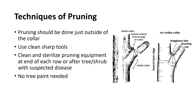Pruning branches should be done just outside of the collar that naturally forms at the junction of the branch and the trunk of the tree. Clean sharp tools must be used when pruning in the nursery. It is a good practice to clean and sterilize pruning equipment at the end of each row and after each tree or shrub that is suspected of being infected with disease. The application of tree paint to wounds is of minimal value and is rarely used in production nurseries.